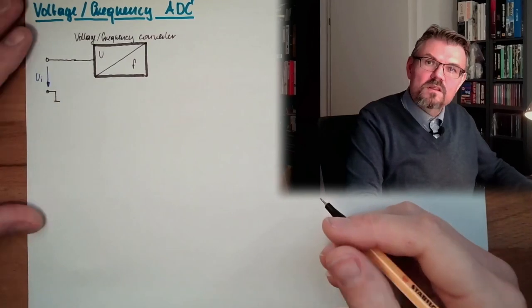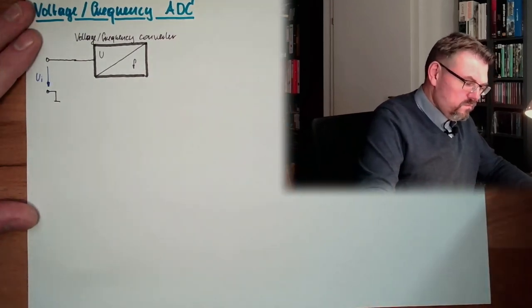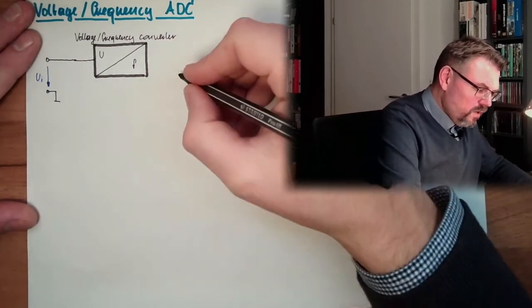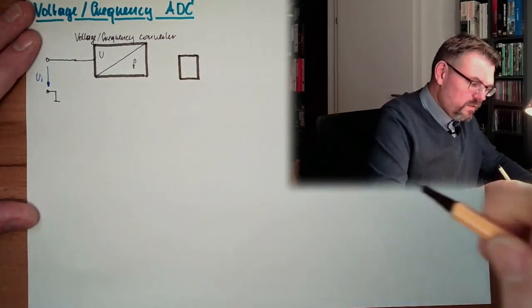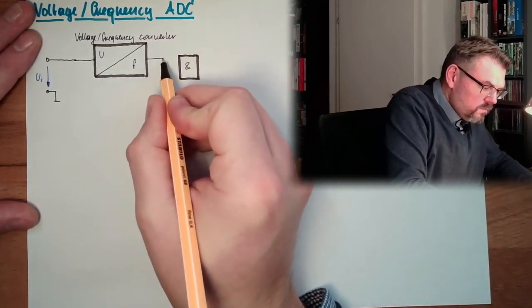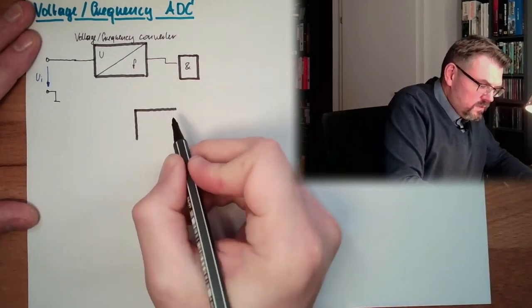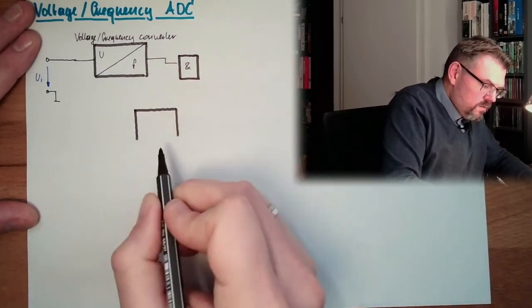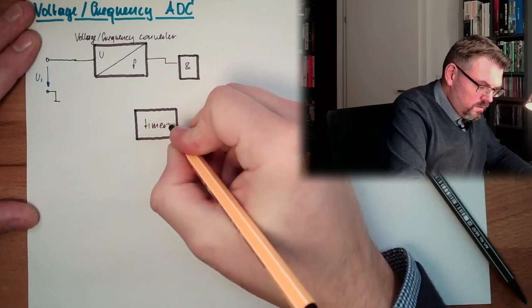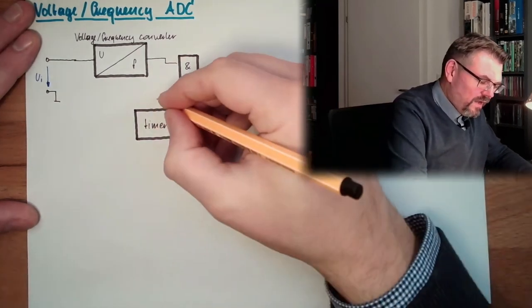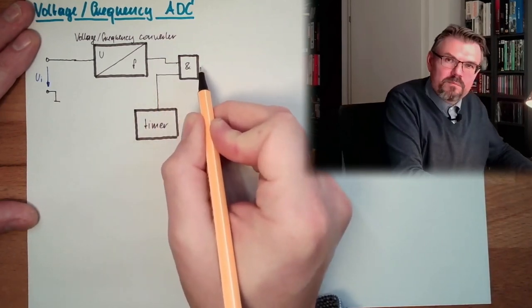High voltage, high frequency. Low voltage, low frequency. The only thing we have to do is have some sort of timer giving a time for how long the impulses shall be passed here.